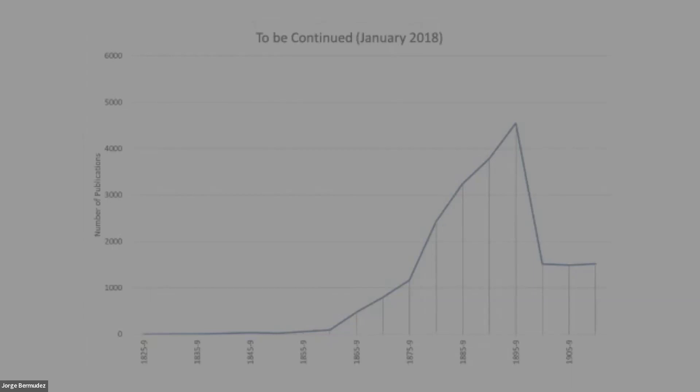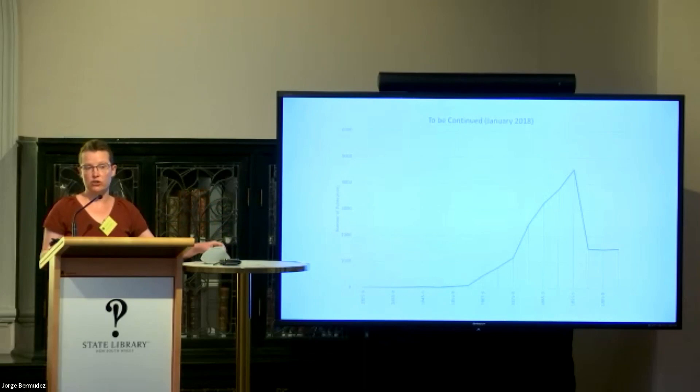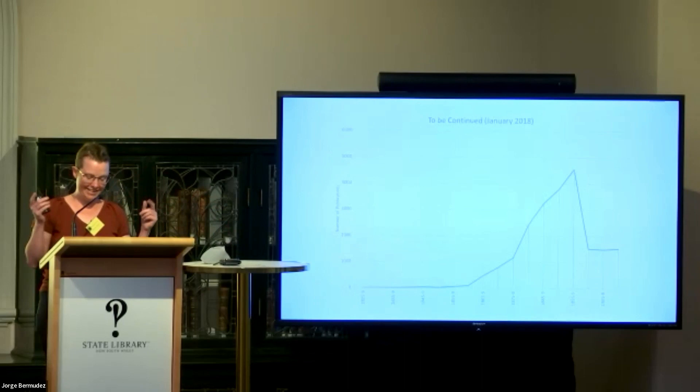From this first part of the project when we launched in 2018, there were two unexpected things. First was that there were really a lot of previously unrecorded Australian works in the newspapers. A recent comparison of 19th century Australian novels in AustLit and in To Be Continued showed very little overlap between the two, and in fact the To Be Continued records double the number of 19th century Australian novels that we're aware of. We've substantially embellished that bibliographical record for the 19th century by doubling it.